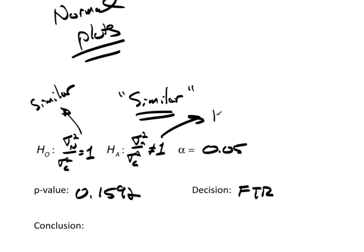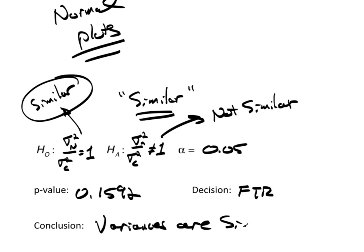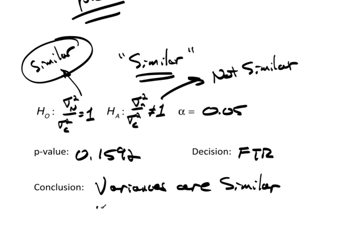So the p-value is 0.1592. The decision was fail to reject. This says they are similar. This says they are not similar. So if we fail to reject, then we said it looks like they are similar. So the conclusion is that the variances are similar. And if they're similar, we want to pool. So therefore, pool equals yes. We will pool.